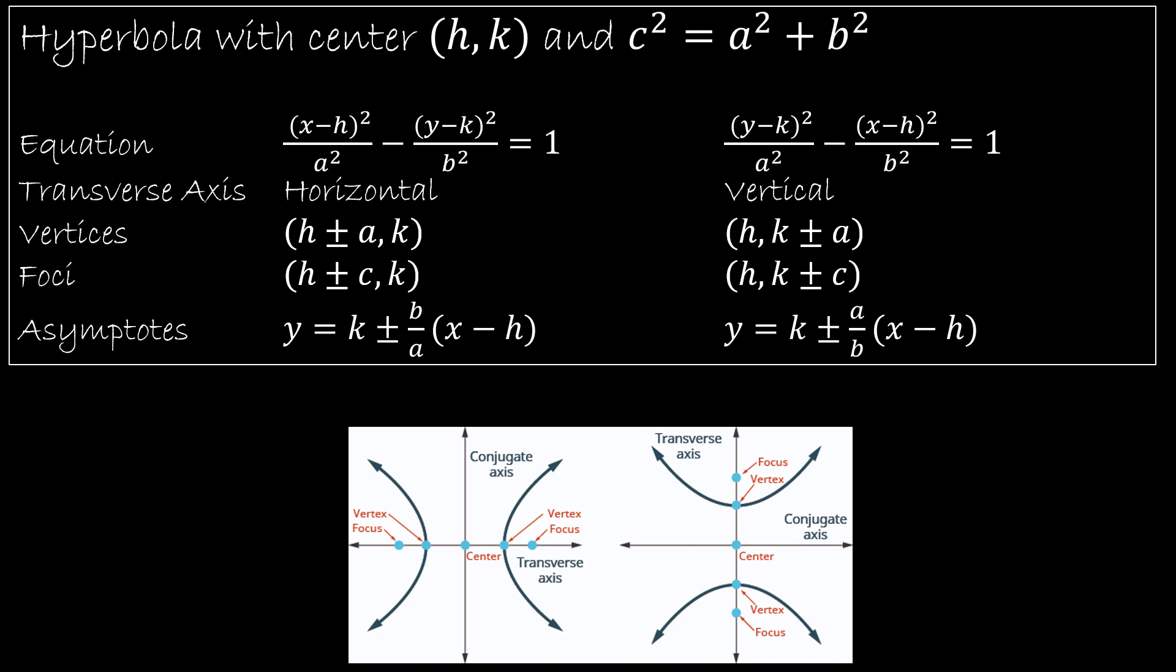So you have the equation. And the difference here, of course, is that the equation includes a minus instead of a plus. And the other difference is because it's minus, the order of the values matter. So if you have the x first, then that means it's going to be a horizontal transverse axis. If you have the y first, it's going to be a vertical transverse axis.